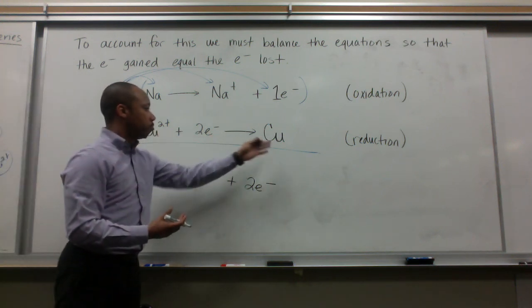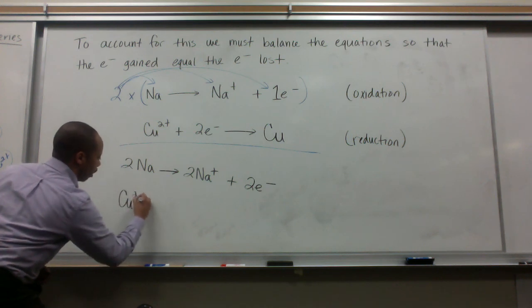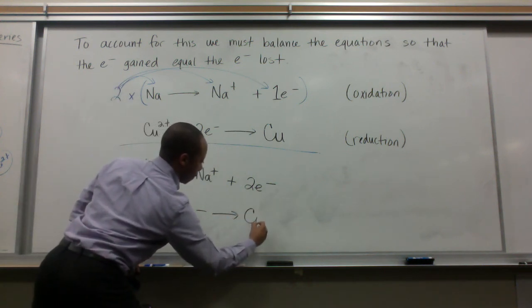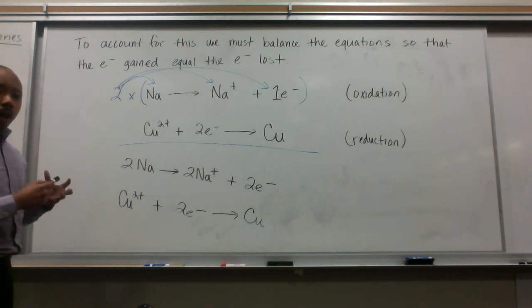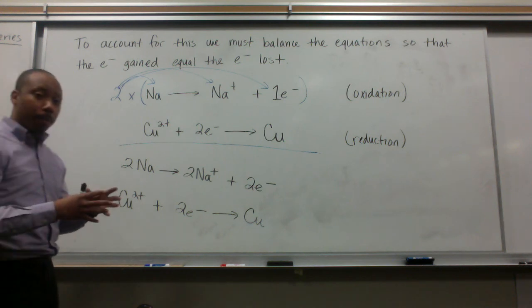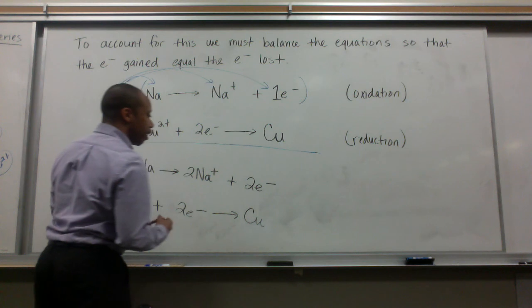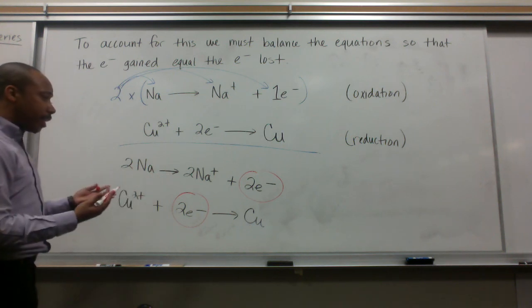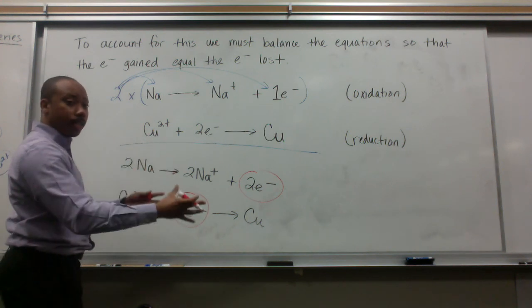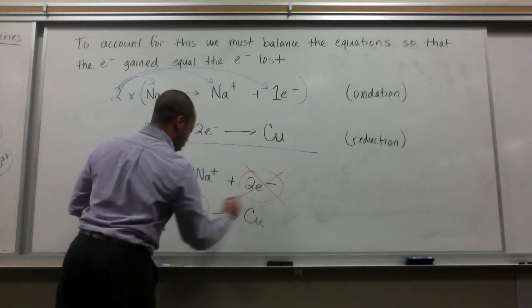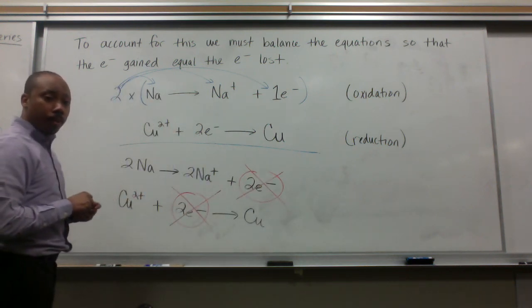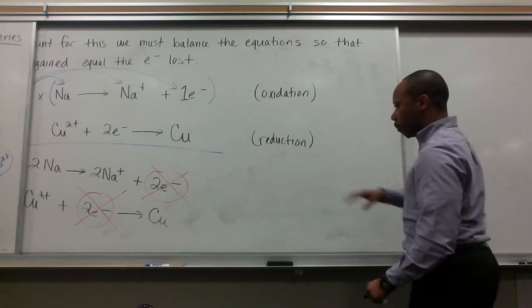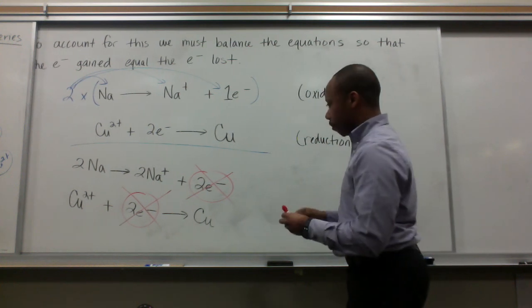We still have this equation here, just as it was. We keep it as it was, because our electron counts are now the same. Now, I want to start forming my overall reaction. In my overall complete net reaction, I do not have electrons in that equation. It makes sense, because one atom lost electrons, the other one gained electrons, so those two processes cancel each other out.